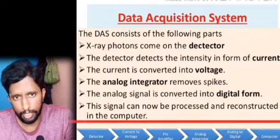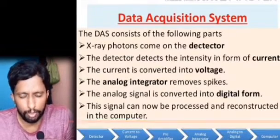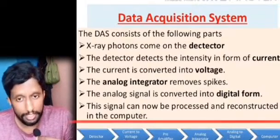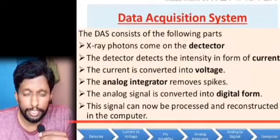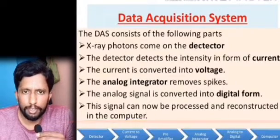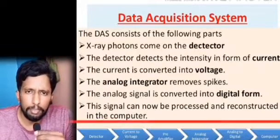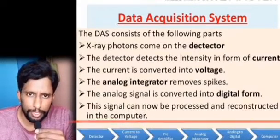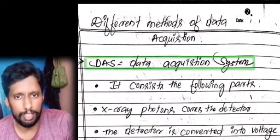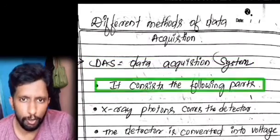The methods of data acquisition follow these steps: X-ray photons, then detectors, then converted to voltage, then an analog integrator, then an analog signal, then a digital signal, and finally a digital image display.